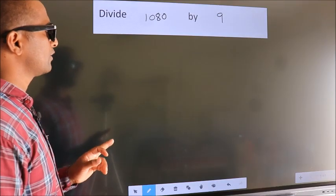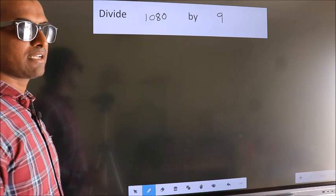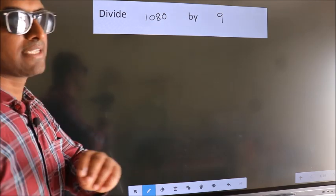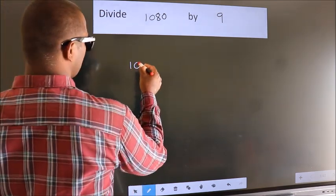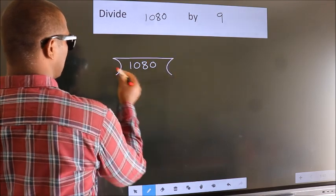Divide 1080 by 9. To do this division, we should frame it in this way: 1080 here, 9 here.